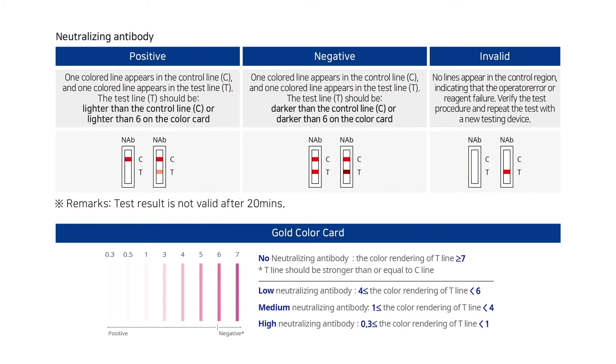Please refer to the color card to interpret the neutralizing antibody test result. The test result is interpreted by using the darkness of the color on the test line. The lighter the color on the test line, the stronger the neutralizing antibody formed in the blood.